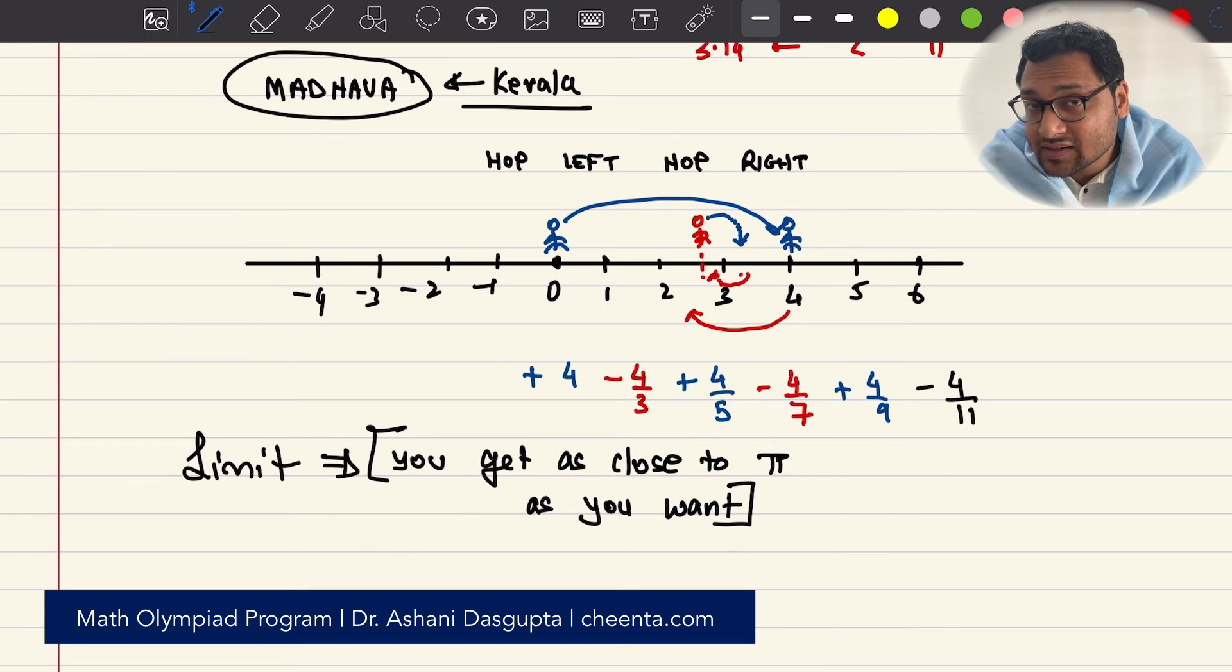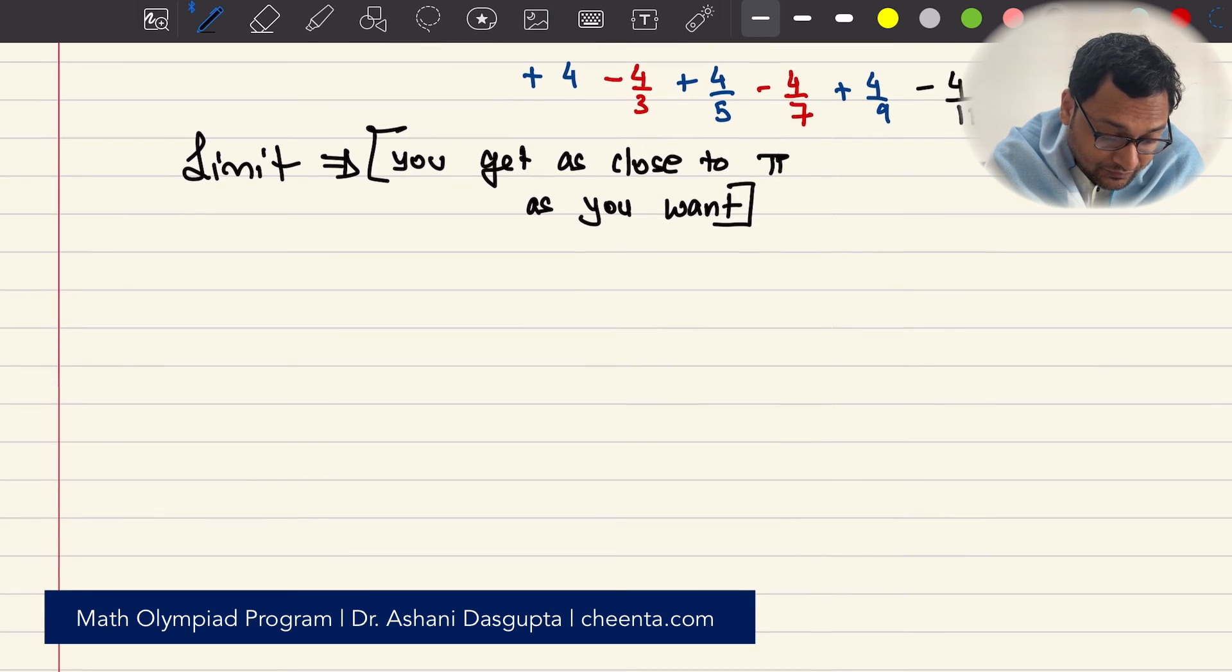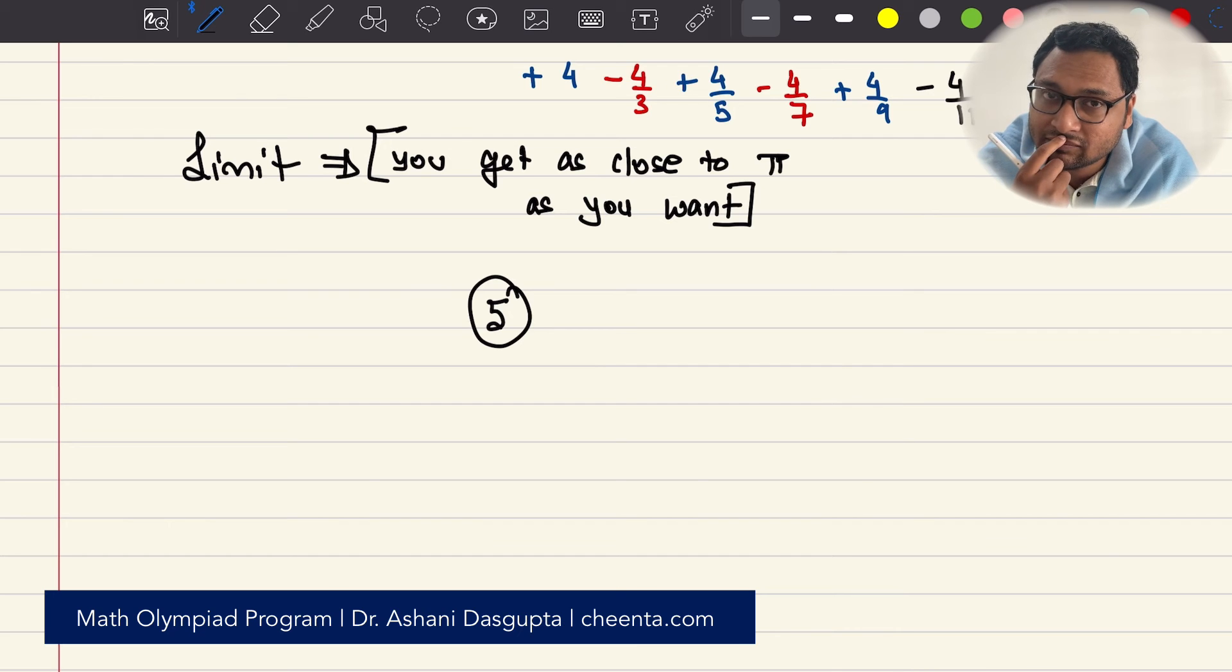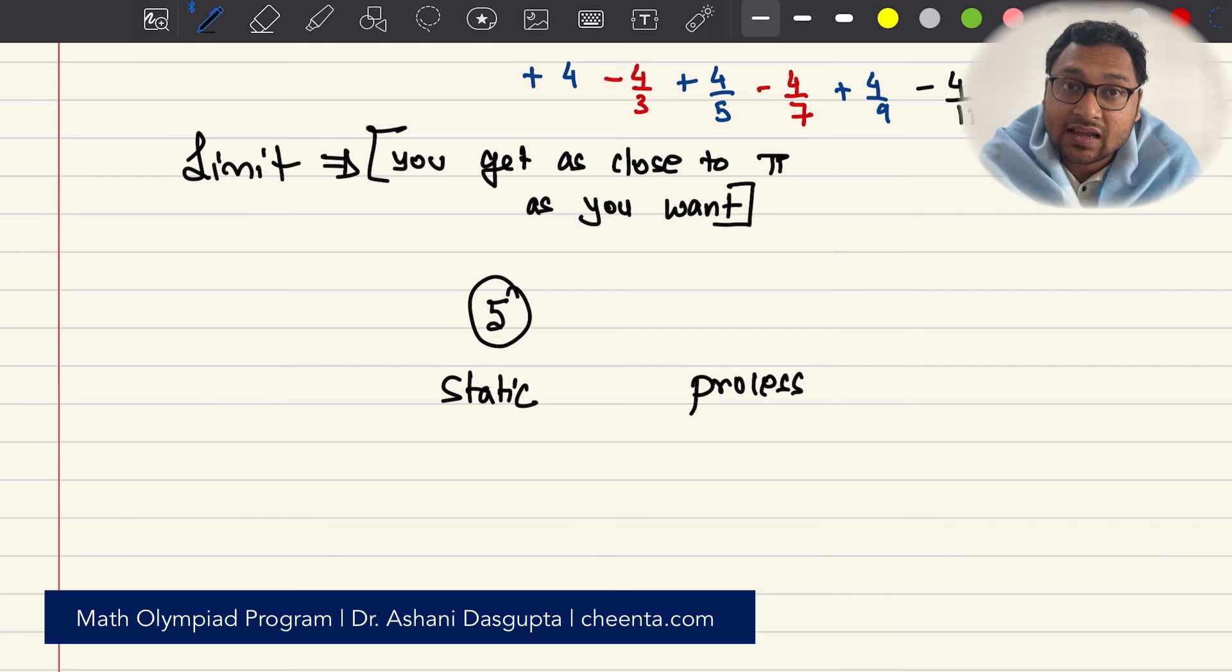I'll tell you why this idea is so revolutionary. Until Madhava's time, a number, let's say the number 5, was regarded as a single number, as one thing, as a static object, as just a number 5, a static thing. What Madhava did, he made the entire thing dynamic. He made the entire thing a process.